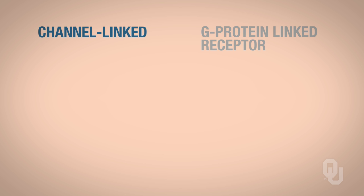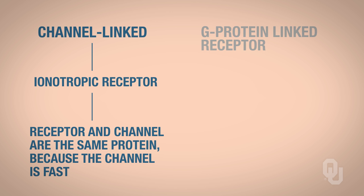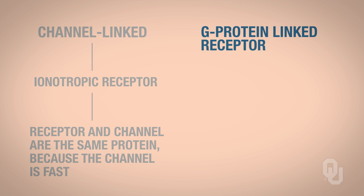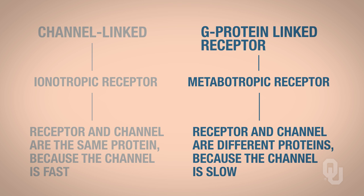If this receptor is channel-linked, we're also going to call it an ionotropic receptor. What this means is that the receptor and the channel are the same protein because the channel is fast. Then we have the G-protein-linked receptors, which are called metabotropic receptors. Just like you learned in the last unit, the receptor and the channel are different proteins because the channel is slow. So remember that if it's slow, it's going to involve a G-protein.